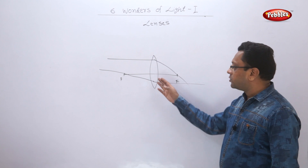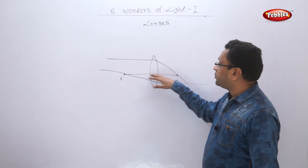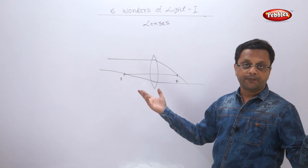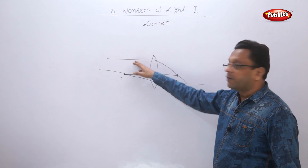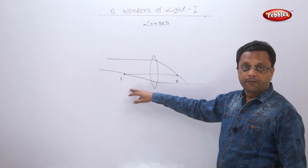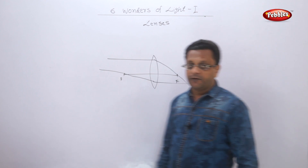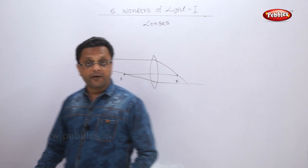Also, if a ray is passing through the optical center, there is no deviation. Based on only these two rules, we are going to see six figures. Let us do the six figures.